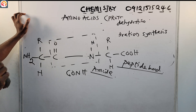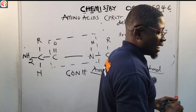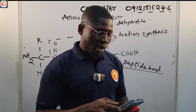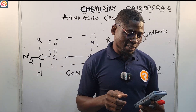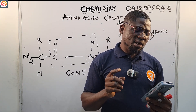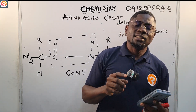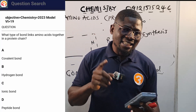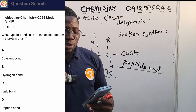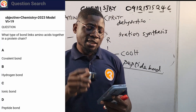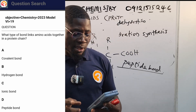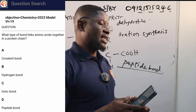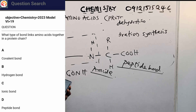Now back to the 2023 JAM question number 19: what type of bond links amino acids together in a protein chain? A — covalent bond, B — hydrogen bond, C — ionic bond, D — peptide bond. The correct answer is peptide bond.